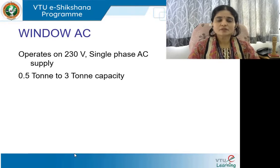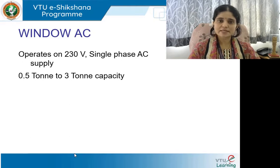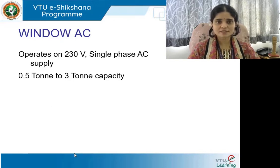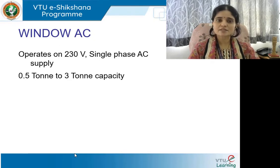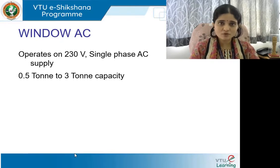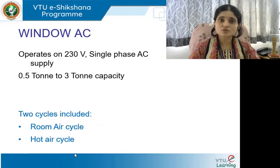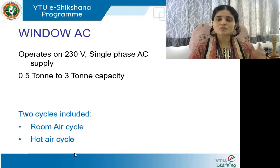Window AC operates on 230 volts single phase AC supply and you can expect 0.5 ton to 3 ton of refrigeration capacity. The price ranges similarly correspond to capacity — lower for 0.5 and more for 3 ton. Based on the room size you will decide what tonnage is required.